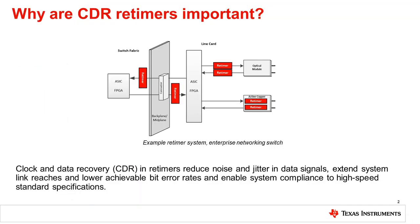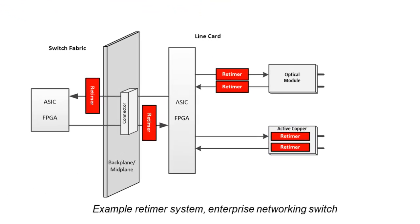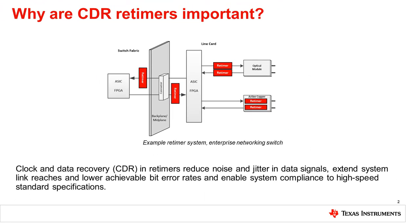Let's talk about the role clock and data recovery, or CDR, retimers play in real systems. The example shown here is an enterprise switch, such as those used in wired local area networks. As data signals are transmitted from one ASIC to another, jitter may arise from different sources. Jitter sources include insertion loss from the board traces, signal reflections at the connector interfaces, and crosstalk noise from adjacent signals. Jitter acts as a bottleneck to system speed and performance, limiting the link reach and achievable bit error rate. A system such as this enterprise switch may use multiple CDRs to restore signal integrity at different points along the data path. Systems typically target performance to industry standards at each of these signal points, and retimers are often required to meet those specifications.